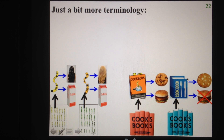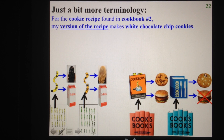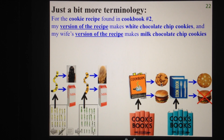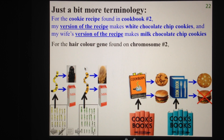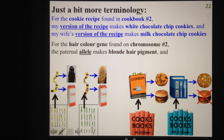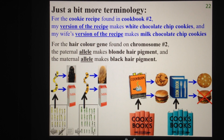To cover a bit more terminology: looking at the cookie recipes found in cookbook number two, my version makes white chocolate chip cookies and my wife's version makes milk chocolate chip cookies. Applying that to proper terminology: for the hair color gene found at this location on chromosome 2, the paternal allele makes blonde hair pigment, and the maternal allele is slightly different and makes black hair pigment. So allele means a particular version of the gene, while gene refers to this location on the chromosome that makes a protein for the hair.